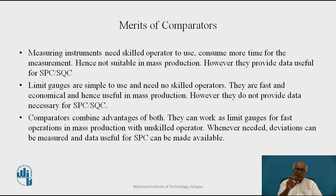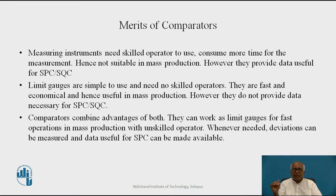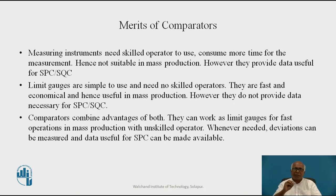Measuring instruments need a skilled operator to use. You might have seen vernier calipers or micrometers — they need a skilled operator who can do the adjustment. So it consumes more time for measurement, and because of that they are not suitable in mass production. However, one advantage of measuring instruments is that they give the actual value of the dimension being measured, which is useful for statistical process control or statistical quality control.